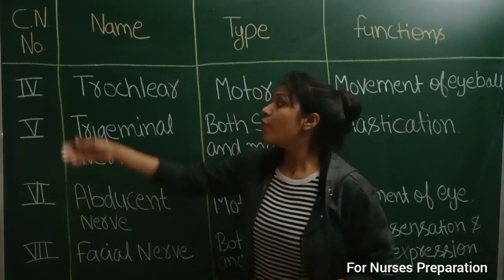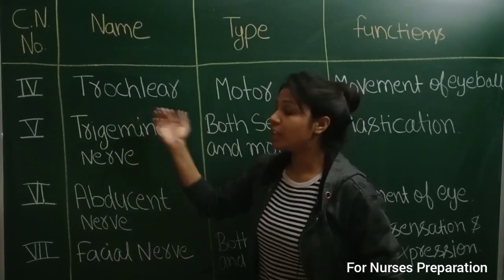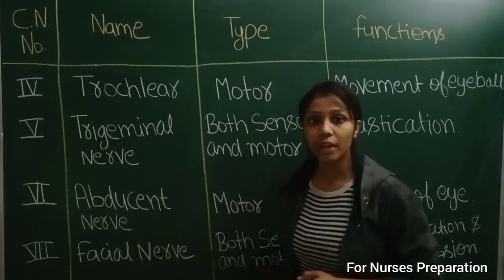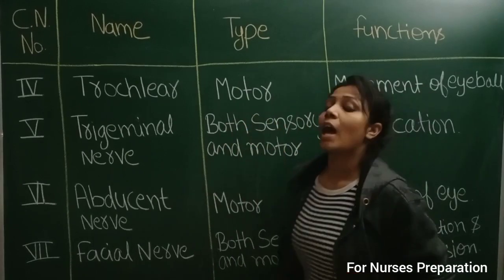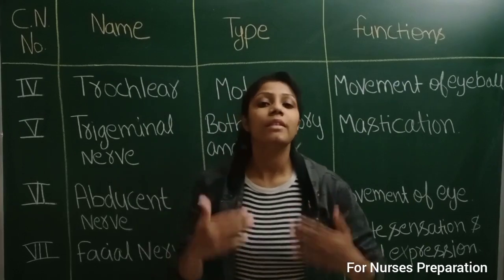Next, the fourth number cranial nerve is trochlear and its type is motor and their function is movement of eyeball.